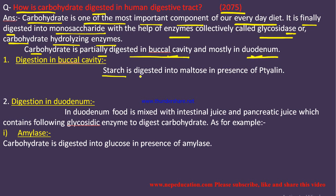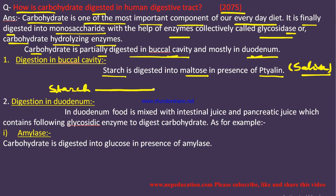In the buccal cavity, starch is digested into maltose in the presence of ptyalin. Ptyalin is a component of saliva secreted by the salivary glands. So the word equation is: starch → maltose, in the presence of ptyalin.